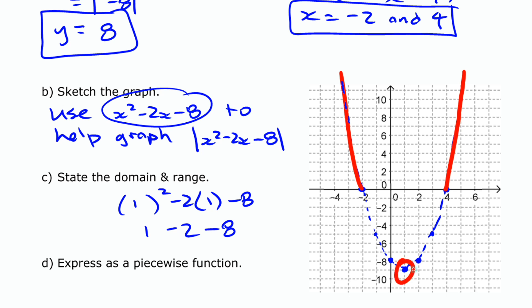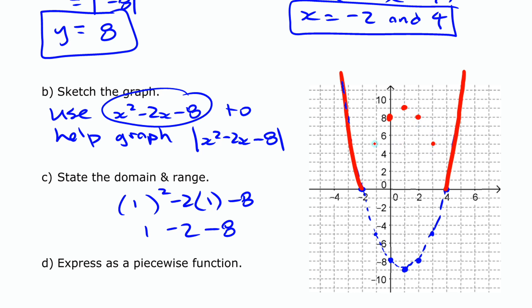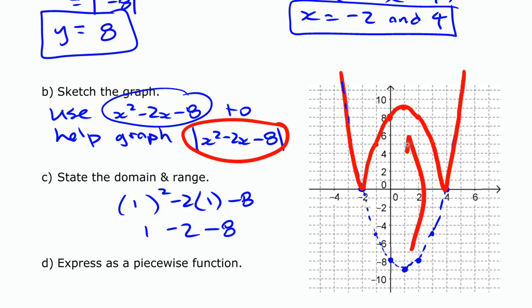So the vertex, which was at negative 9, is now going to be at positive 9. The y intercept becomes positive 8 instead of negative 8. The part of the graph between the x intercepts gets reflected up above, giving the graph a strange W-shape. The part shown in red is what gets reflected upward.